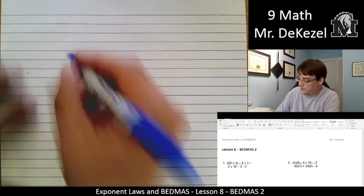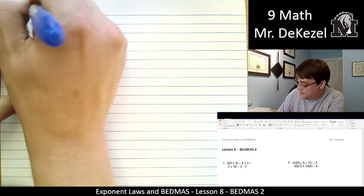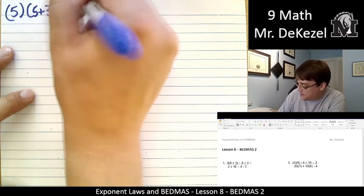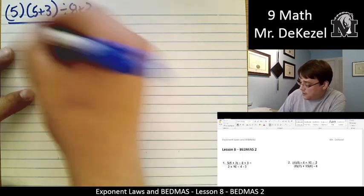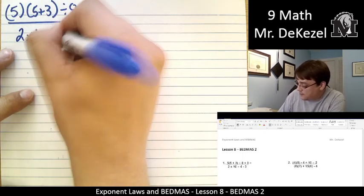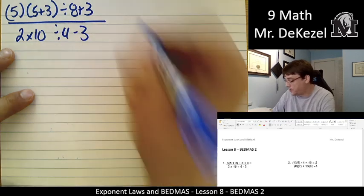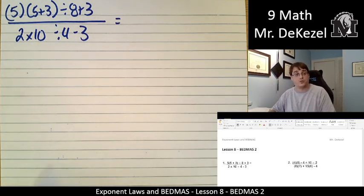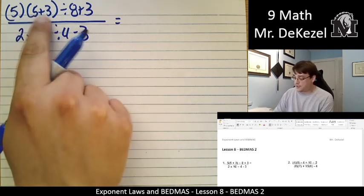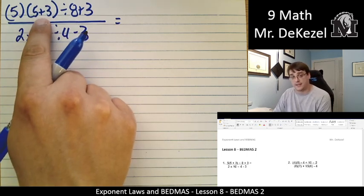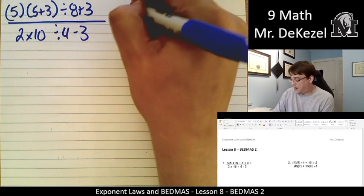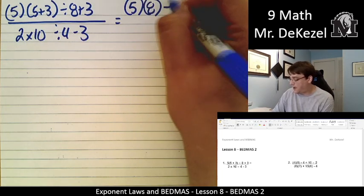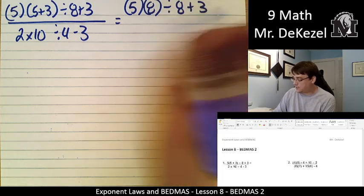We have our first problem. 5 times (5 plus 3) in brackets divided by 8 plus 3, and then 2 times 10 divided by 4 minus 3. So we are going to treat the top and the bottom completely separately and just go step by step with each one. The first step in this part is to do the brackets. So 5 multiplied by (5 plus 3) is 8, divided by 8 plus 3.